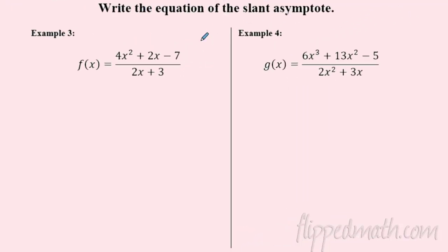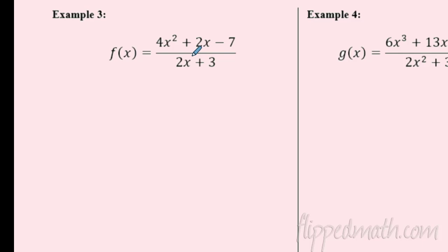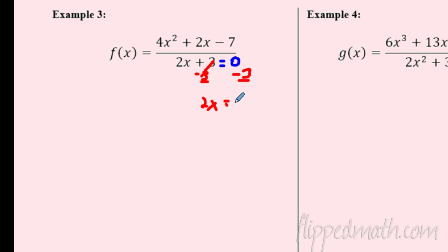Let's find some more slant asymptotes. In Example 3, I know there's a slant asymptote because the degree on top is one higher than the degree on the bottom. Long division always works, but I'll show synthetic too. To use synthetic here, I need to find what makes the denominator zero: solving 2x = -3 gives x = -3/2, or -1.5.